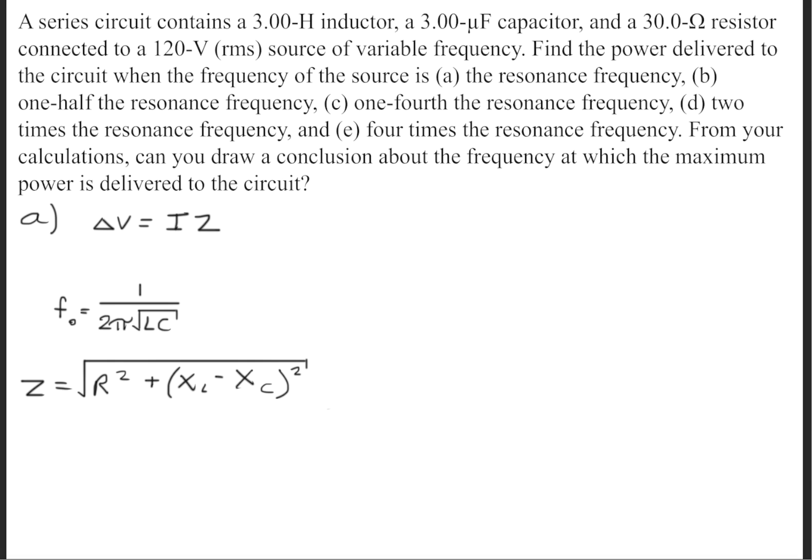The second formula is the impedance formula. The impedance equals the square root of the resistance squared plus the inductive reactance minus the capacitive reactance squared. The last one is a form of Ohm's law, which is ΔV equals I times the impedance. We use this form because we're dealing with an AC circuit.